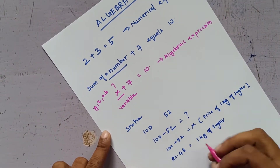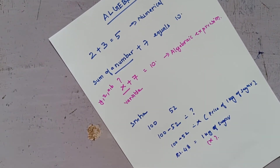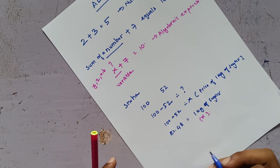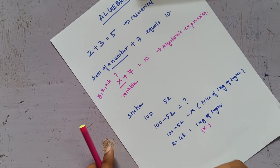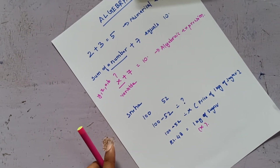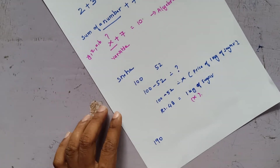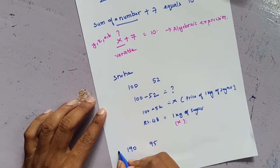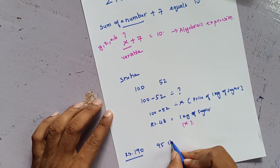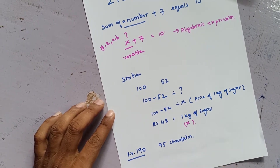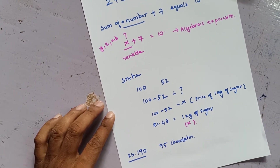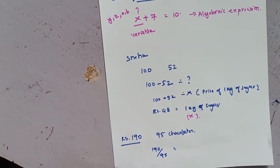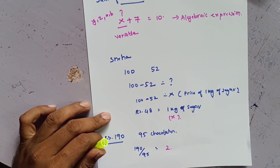Now another example: I have a birthday today and I have 190 rupees. I want to buy chocolates, and the shopkeeper gave me 95 chocolates. How much I had was 190 rupees, and I got 95 chocolates. What is the cost of one chocolate? Obviously, I'm going to divide 190 by 95, which is 2. The cost of one chocolate is 2 rupees.